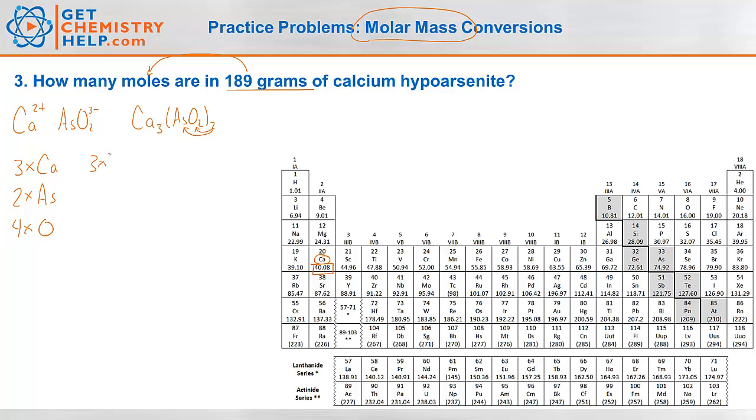Two arsenics. Arsenic has a mass of 74.92. And four oxygens. Oxygen has a mass of 16.00. So we add those all up. So three calciums comes to a total of 120.24. Two arsenics comes to a total of 149.84. And four oxygens would be 64.00. Add those all together. And the molar mass of calcium hypoarsenite is 334.08 grams per mole.